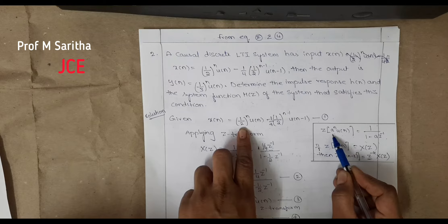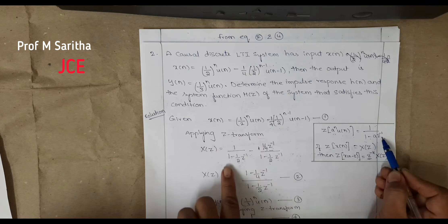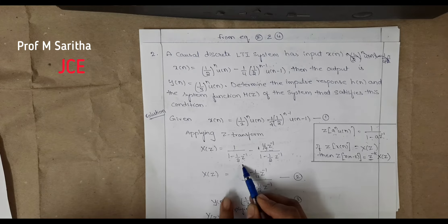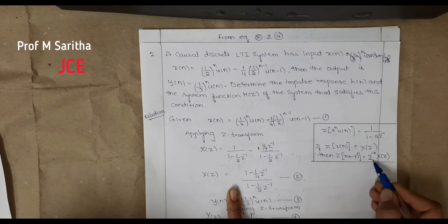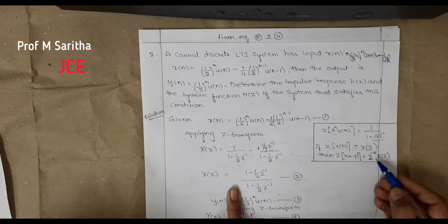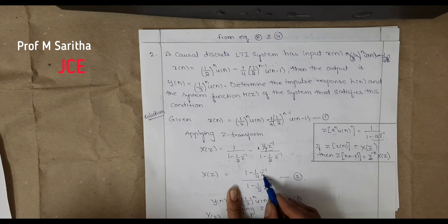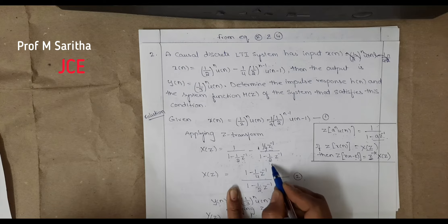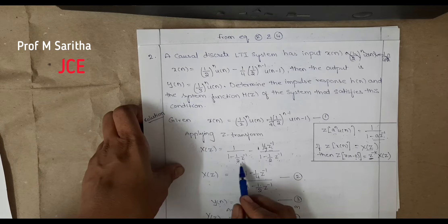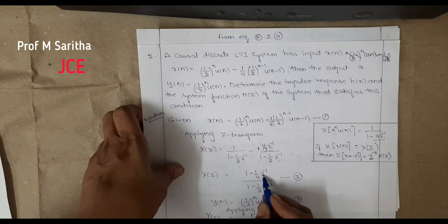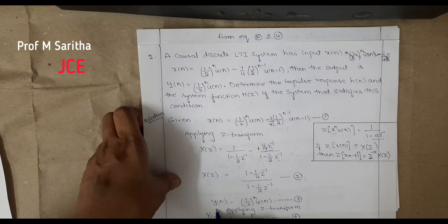Applying the Z-transform using the formula a^n u(n) ↔ 1/(1 − az^(−1)): the first term gives 1/(1 − (1/2)z^(−1)), and the second term (shifted version) gives −(1/4)·z^(−1)/(1 − (1/2)z^(−1)). Taking the LCM, X(z) = (1 − (1/4)z^(−1)) / (1 − (1/2)z^(−1)). Let us take this as equation 2.